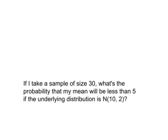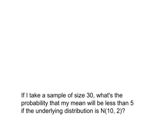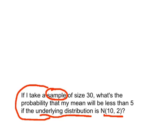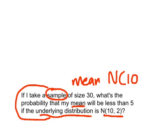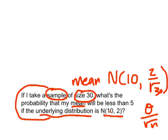Now a more complex problem: if I take a sample of size 30, what's the probability that my sample mean will be less than five, given the underlying distribution is normally distributed with mean ten and standard deviation two? The sample means will be distributed normally with a mean of ten, but the standard deviation becomes the standard error: sigma divided by the square root of n, which is two over the square root of thirty.